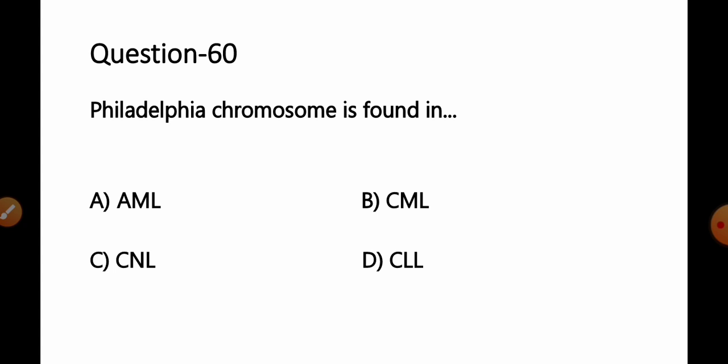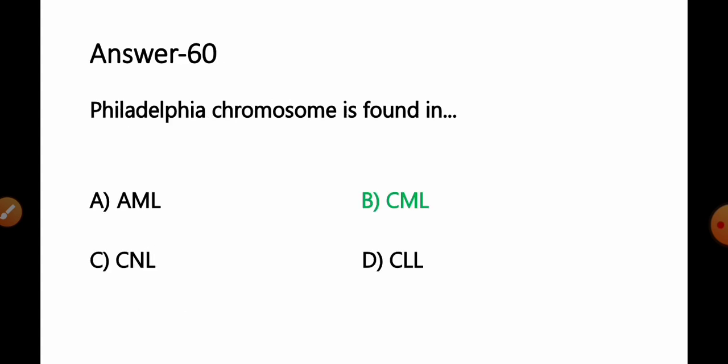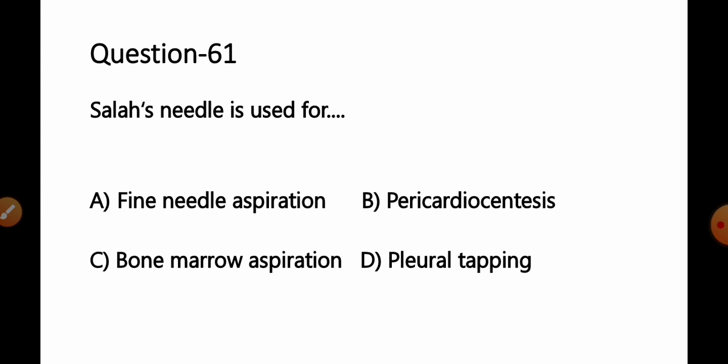Question number 60: Philadelphia chromosome is found in — option A: AML, B: CML, C: CNL, D: CLL. The Philadelphia chromosome is an abnormality of chromosome 22 in which part of chromosome 9 is transferred to it. Bone marrow cells containing the Philadelphia chromosome are commonly found in chronic myelogenous leukemia (CML) and sometimes in acute lymphocytic leukemia (ALL). So option B, CML, is the correct answer.